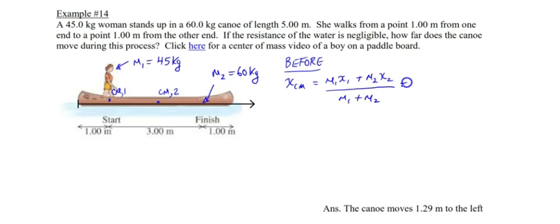So therefore, the mass of the woman is 45 kilograms. The distance that she's away from the left end of the canoe is one meter. The mass of the canoe is 60 kilograms. And the distance that it is from the end would be half of the total distance. That's five, so half of five is 2.5. And the total mass would be 45 kilograms plus 60 kilograms.